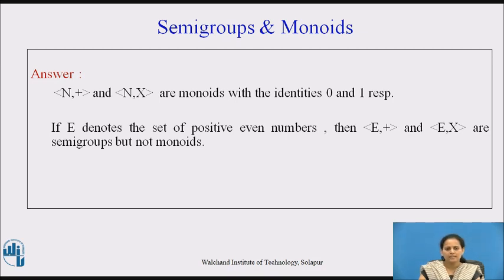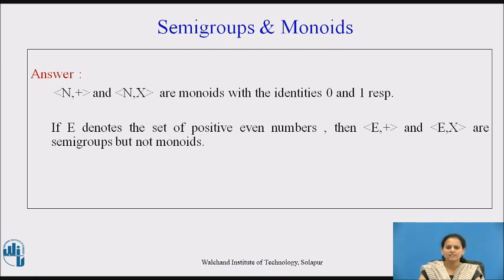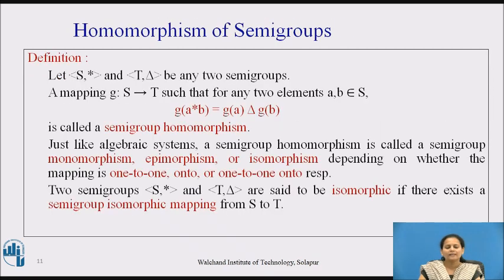Lastly, consider this example: if E denotes the set of positive even numbers, what can be said about the algebraic systems (E, +) and (E, ×)? These systems are only semigroups because they only satisfy the property of associativity. Since the set contains only positive even integers, finding an identity for addition is not possible within this set, and similarly, finding an identity for multiplication from the set of positive even numbers is also not possible.